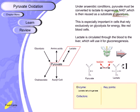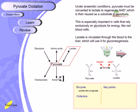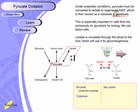Under anaerobic conditions, pyruvate must convert to lactate to regenerate NAD+, which is really important because many important steps of glycolysis burn through all the NAD+, leading to the production of NADH. We need to shift NAD+ back into action so it can be used as a substrate in glycolysis, and that can be done by fermentation of pyruvate into lactate.